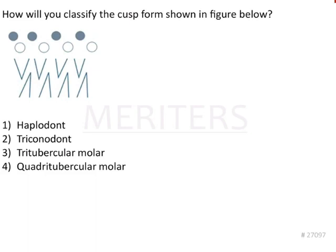Now the question here is how will you classify the cusp form shown in the figure below? So there is a cusp form. Here you can see these are tubercles and these are giving rise to one cone. So each cusp is just nothing but a cone, one cone. So basically this is the simplest form, simplest cusp form and this particular cusp form is generally seen in crocodiles.